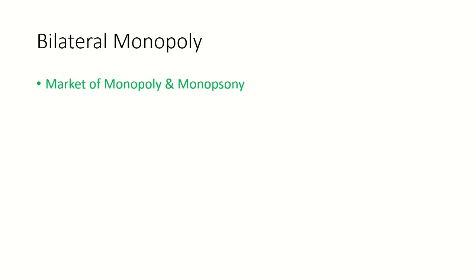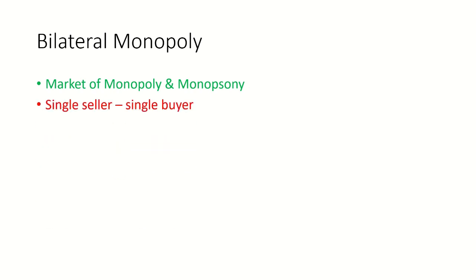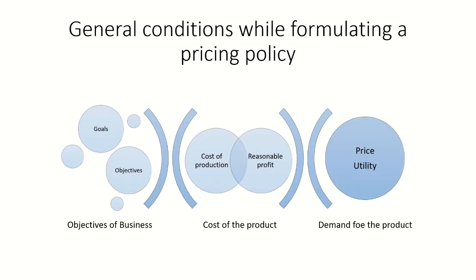Bilateral monopoly means it is a market of both monopoly and monopsony — that is, a single seller and a single buyer. It is a market situation in which there is only one seller and only one buyer.